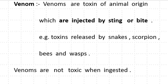What is Venom? Venoms are toxins of animal origin which are injected by sting or bite. For example, toxins released by snakes, scorpions, bees and wasps are not toxic when ingested.